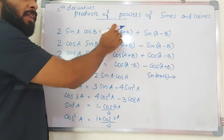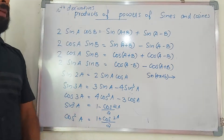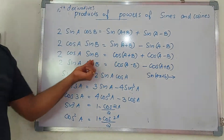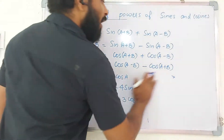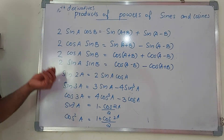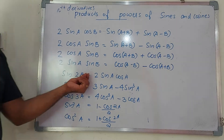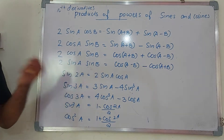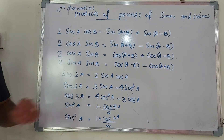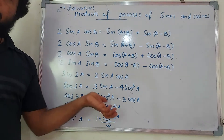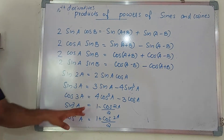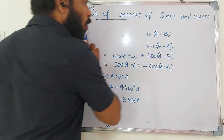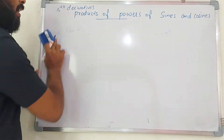The key formulas are: 2·sin(a)·cos(b) = sin(a+b) + sin(a−b); 2·cos(a)·sin(b) = sin(a+b) − sin(a−b); 2·cos(a)·cos(b) = cos(a−b) + cos(a+b); 2·sin(a)·sin(b) = cos(a−b) − cos(a+b). Also: sin(2a) = 2·sin(a)·cos(a); sin(3a) = 3·sin(a) − 4·sin³(a); cos(3a) = 4·cos³(a) − 3·cos(a); sin²(a) = (1 − cos2a)/2; cos²(a) = (1 + cos2a)/2.